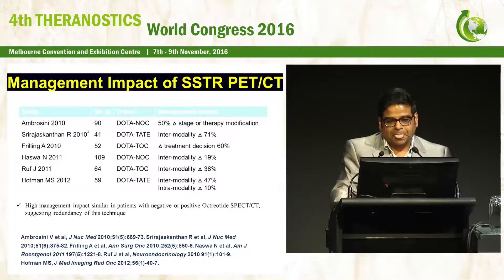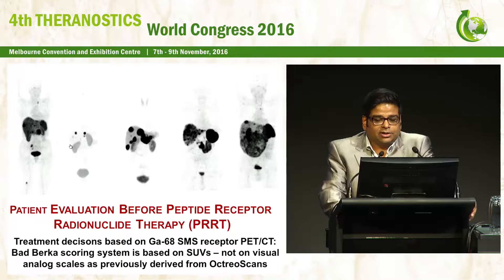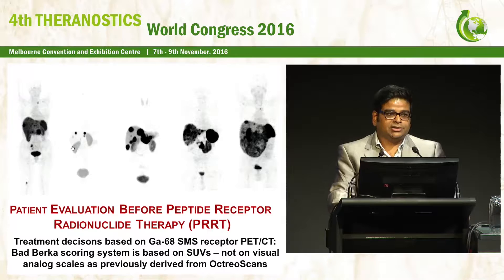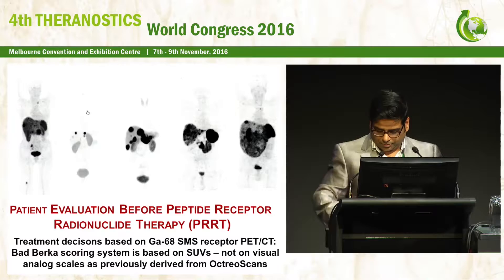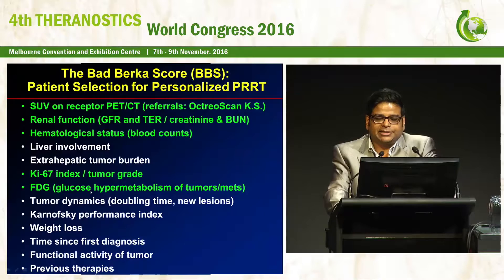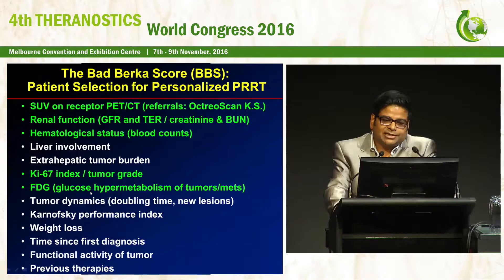Patients are always evaluated before PRRT by gallium-68 receptor PET CTs, and the decision to treat is taken based on the SUVs on the receptor PET CTs. Patient selection for personalized PRRT depends not only on the strength of receptor expression, but also on many factors like renal function, blood counts, proliferation status of the tumor, and patient-specific characteristics like Karnofsky index.